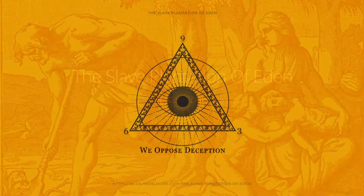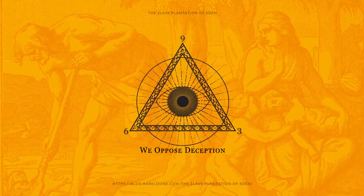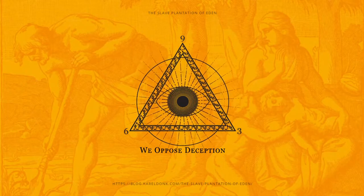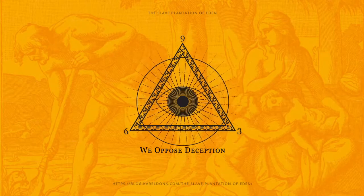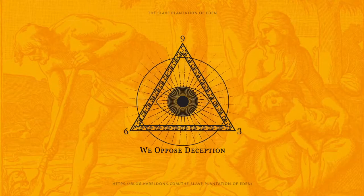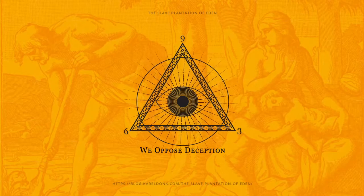If, like me, you've wondered why all of our cultures, social institutions, and ways of living together have elements of slavery that are deeply, and indeed even fundamentally, embedded, then I hope you realize that this is because that's how civilization started many thousands of years ago, enforced on us by a specific extraterrestrial ruling class.